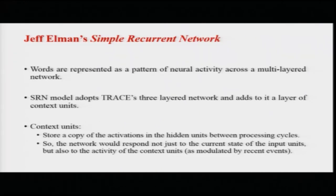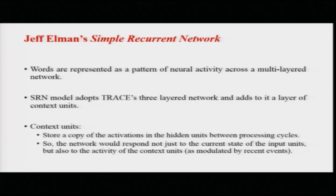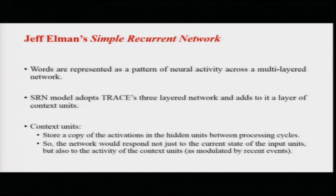In the simple recurrent network model, words are represented as a pattern of neural activity across a multi-layered network. You can imagine a network of neurons with differential activity storing different kinds of words. For example, with neurons 1 through 5, a word might be represented as 10% activity in neuron 1, 20% in neuron 2, and so on - this particular pattern of activity is the signature of that word. The same network of neurons can store a different word with a slightly different pattern of activity.